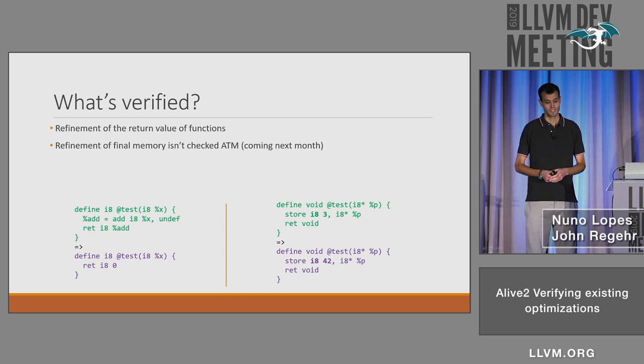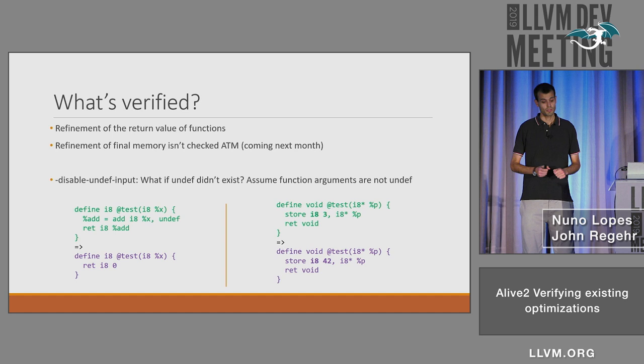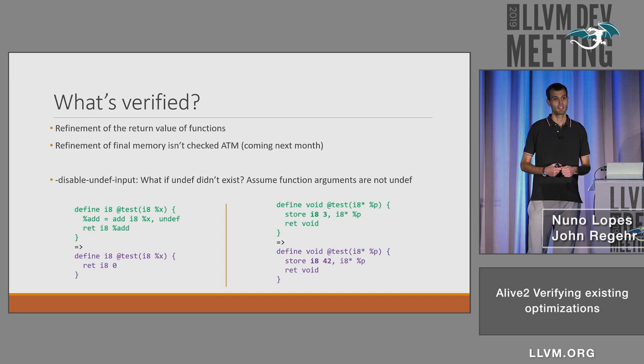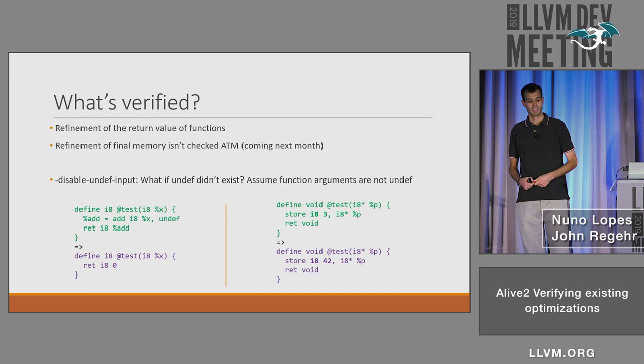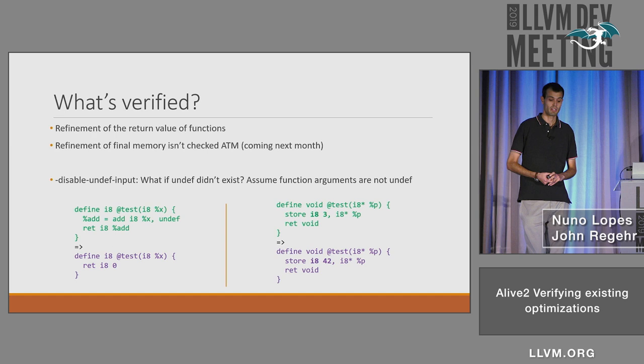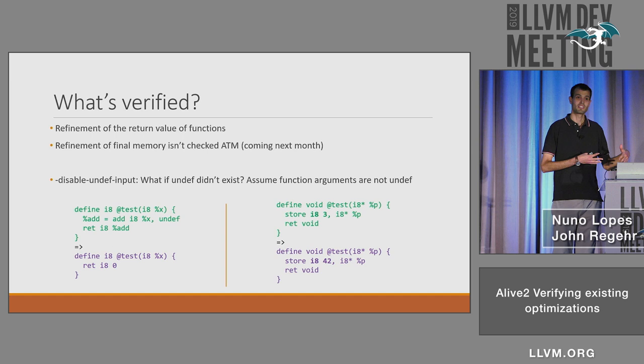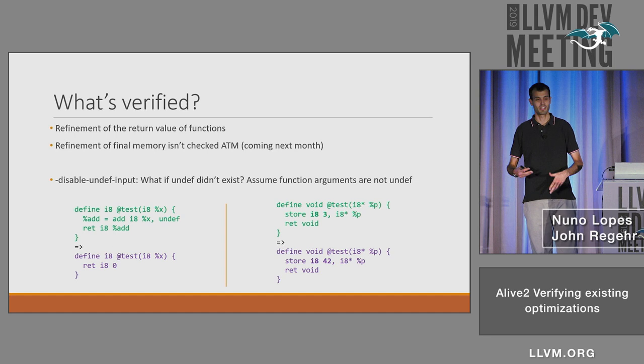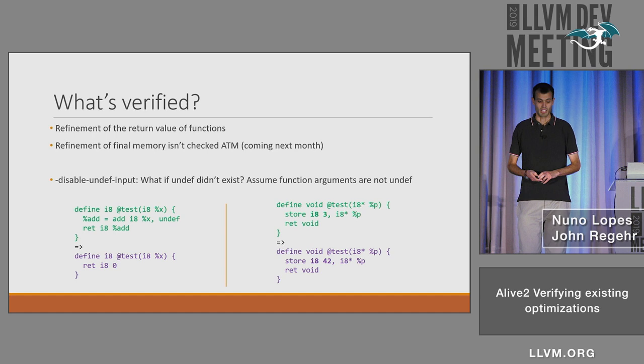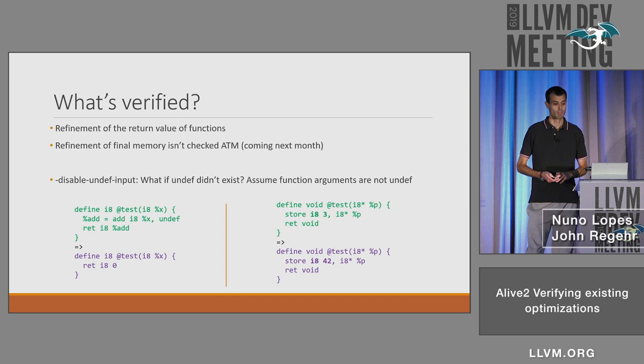You can influence what's verified with a switch that asks: what would the world look like if undef died? You can pretend undef doesn't exist and try verification that way. Don't abuse this, because right now undef exists and you cannot insert an optimization in LLVM that is wrong if undef doesn't exist. But it's useful just to reason about what the world would look like without undef. We ran experiments like these to see how many bugs go away if we remove undef.